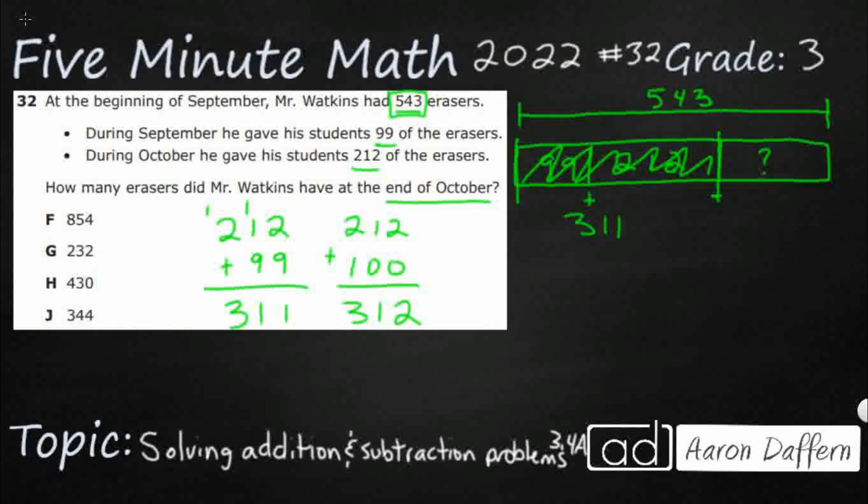But in order to get that 100, I had to add 1 to the 99. So in order to get it back to the actual answer, I need to take that 1 back away. So 311. So you could do a little bit of compensation there, where you're just making that 99 a little bit easier.